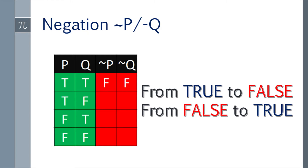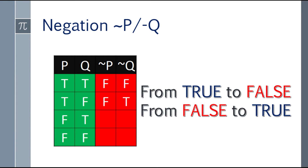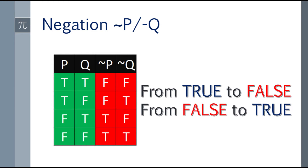For the second row, P is true so negating gives false, and Q is false so it becomes true. For the third row, P is false so it becomes true, and Q is true so it becomes false. And lastly, the fourth row with two falses — negating gives two trues.